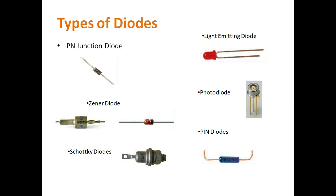The types of diodes include: PN junction diode, Zener diode, PIN diode, photodiode, and light-emitting diode (LED), each shown with their pictures.